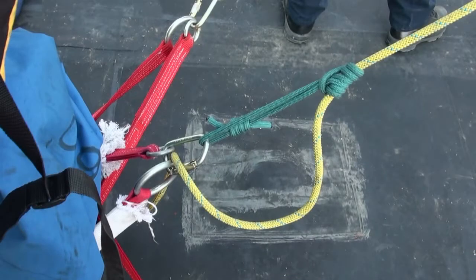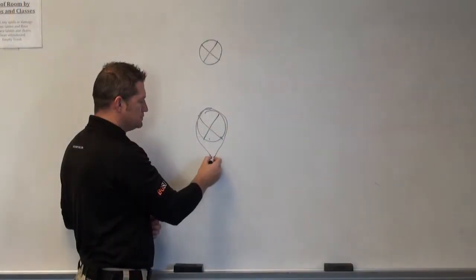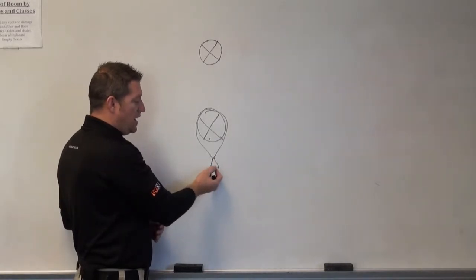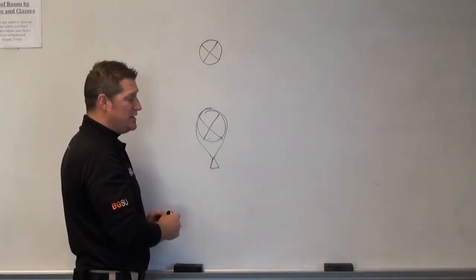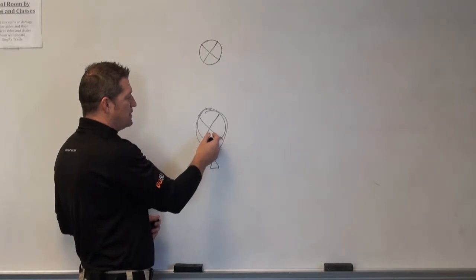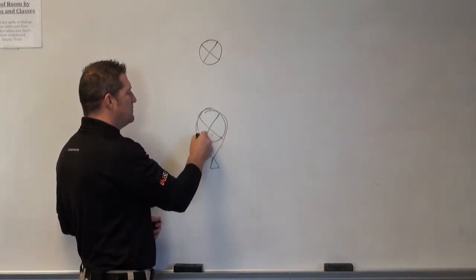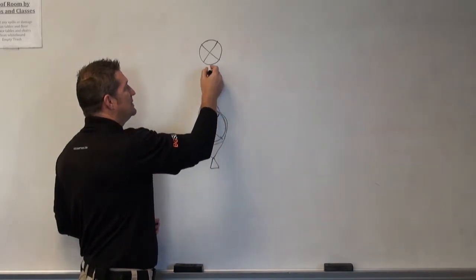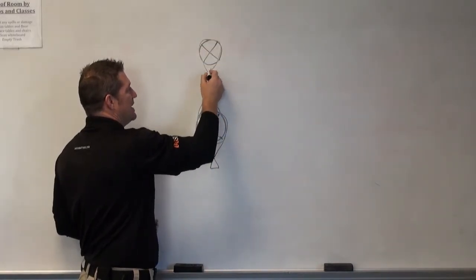So in this application, we would perhaps wrap that primary anchor with an anchor strap, have either our change of direction or the hub of our lower haul system belay, whatever the application is, and then to support this primary anchor, we would implement our tension back tie coming back to this secondary anchor.